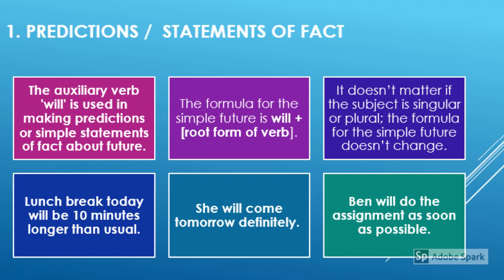Now look at the three example sentences in simple future tense. Lunch break today will be 10 minutes longer than usual. She will come tomorrow definitely. Ben will do the assignment as soon as possible. So here, will be, will come, will do are the verb structures which belong to simple future tense.